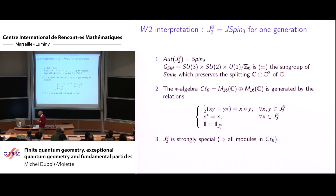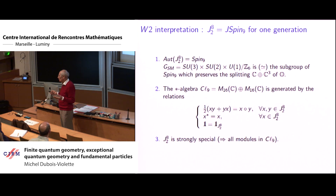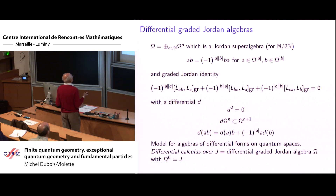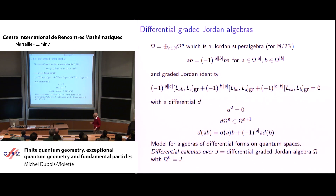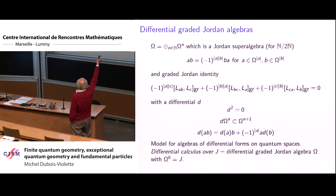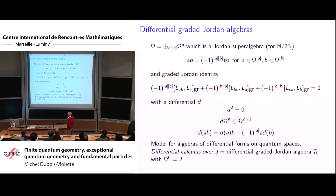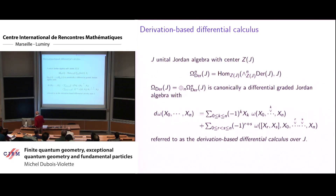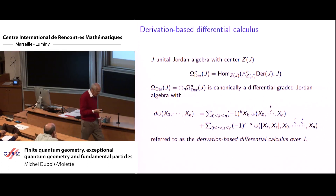Now I must define the theory of connections on Jordan modules and, first of all, a differential calculus. What is the analog of differential forms on such a Jordan algebra? I claim that we take as the analog of differential forms a graded Jordan super-algebra over ℕ, with a Z/2Z grading induced by the degree, equipped with a differential. I call this a differential calculus over G — a differential graded Jordan algebra such that the degree-zero part is the original algebra.